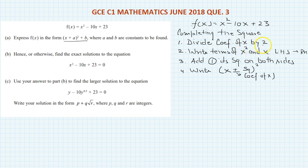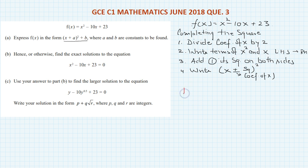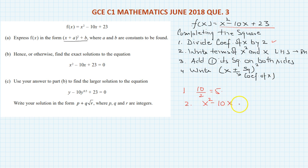First, divide the coefficient of x by 2. This is our equation. The coefficient of x is 10, so 10 over 2 equals 5. Number two: write the terms of x squared and x on the left hand side and the constant on the right hand side. So x squared minus 10x on one side, and the constant term goes to the other side with a sign change, giving minus 23.